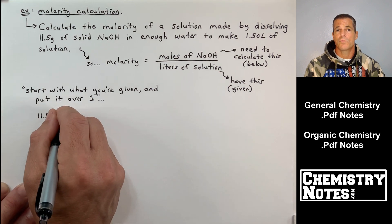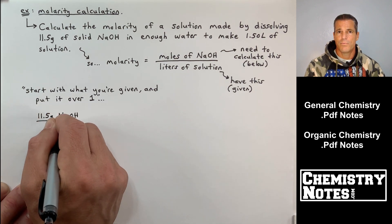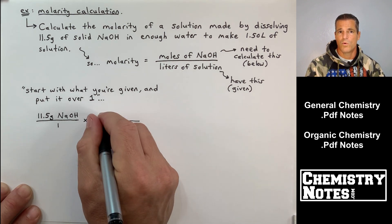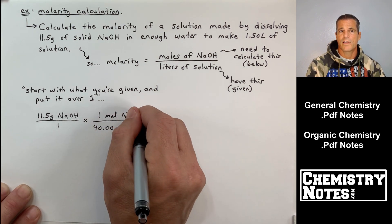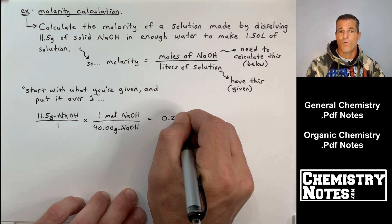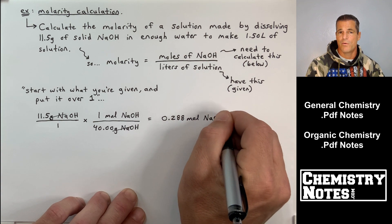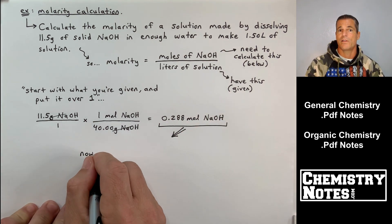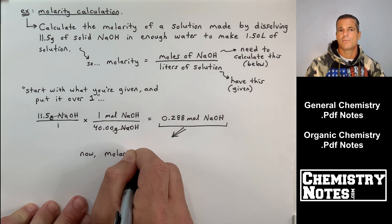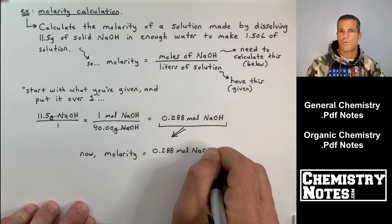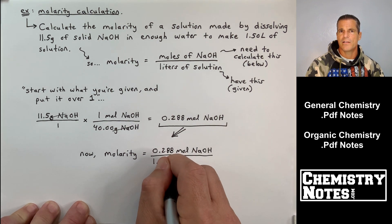So I'm going to start with what I'm given, and put it over 1, in order to find the number of moles of NaOH. I'm looking for moles of NaOH, I can do it in one step. Start with what you're given, which is 11.5 grams of NaOH, divide by 40.00 grams of NaOH per mole. That's dividing by the molar mass, I end up with 3 sig figs, 0.288 moles of NaOH. Well, that's going to be my numerator in the molarity equation.